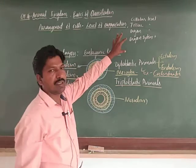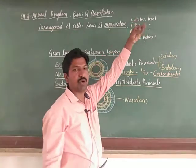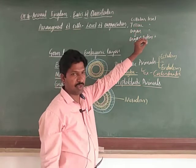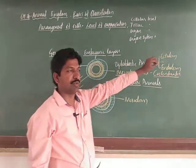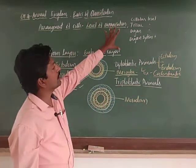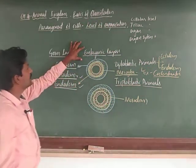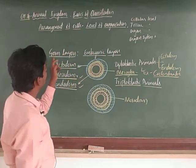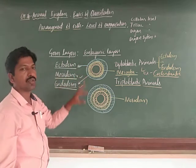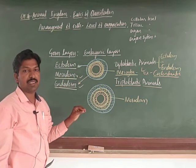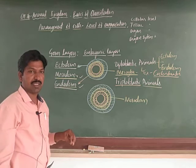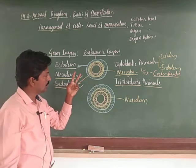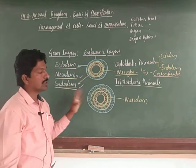This is what we mean by arrangement of cells: in sponges it is cellular level, then tissue level, organ level, organ system level of organization. Now what we are studying is how cells are arranged in germ layers — either two layers or three layers. Basically, in embryonic condition, the animal must show either two layers or three layers.